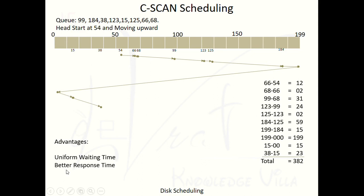The first advantage of C-SCAN is uniform waiting time and better response time. In SCAN scheduling, the head comes back with reading and writing activities, so reaching positions like 38 and then 15 takes more time. In C-SCAN, the head returns without doing any reading or writing, so it moves much faster back to the start. This means requests at the lower end are served more quickly, giving uniform waiting time and better response time.